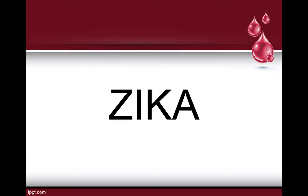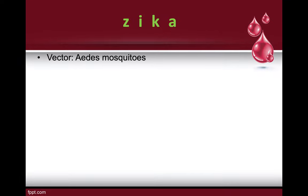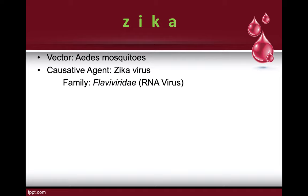Zika is also a vector-borne disease carried by the Aedes mosquito. The causative agent is the Zika virus, also from the family Flaviviridae — an RNA virus. The incubation period is usually 3 to 14 days, meaning from the moment of exposure to the appearance of the first symptoms it takes around 3 to 14 days.